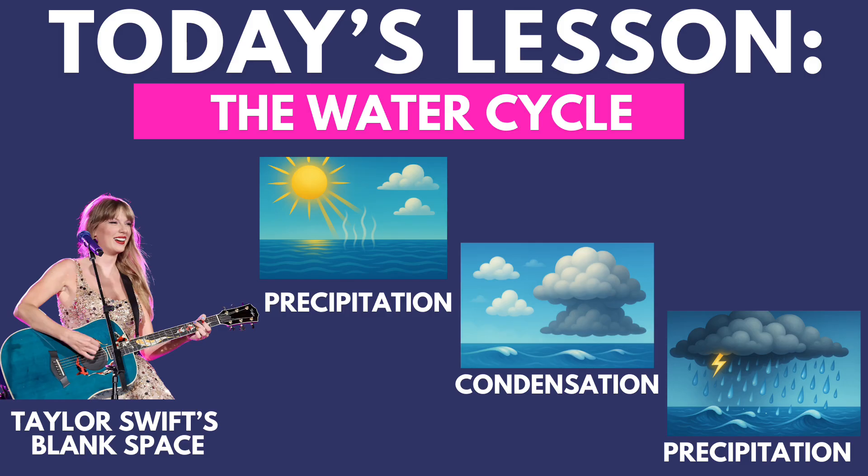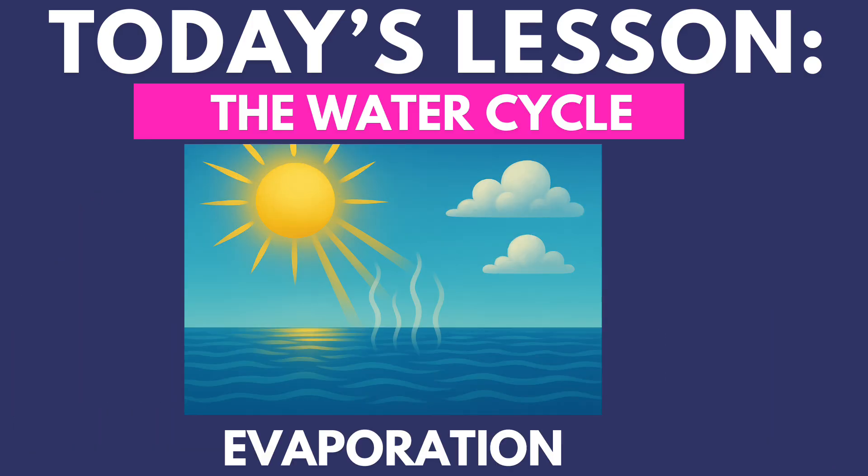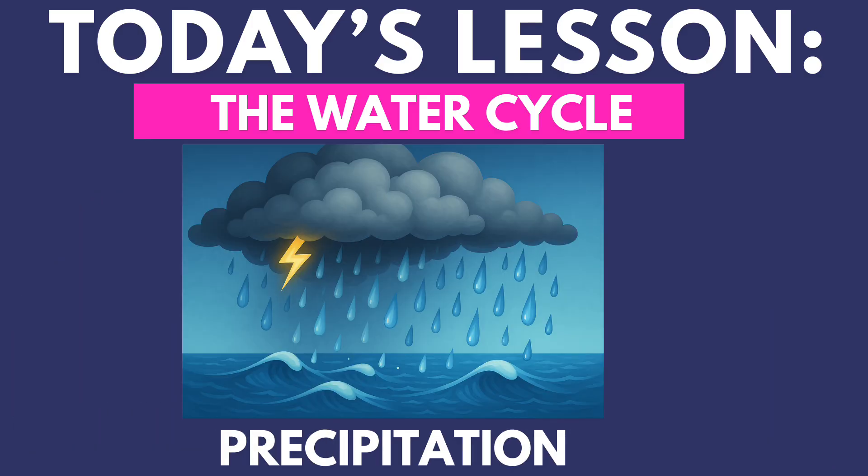In today's lesson, we will be learning about the water cycle. The water cycle is the continuous movement of water on, above, and below Earth's surface, driven by the sun's energy and gravity. We will learn about the three stages: evaporation, condensation, and precipitation.